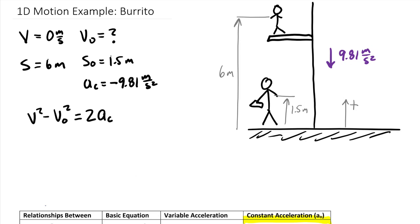Now I wrote this as a sub c versus a naught. They're both referring to a constant acceleration. I'll stick with my a sub c, and this is times s minus s naught. So rearranging this, we know that we're going to solve for v naught.